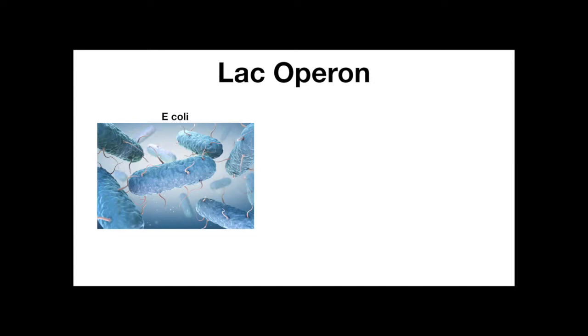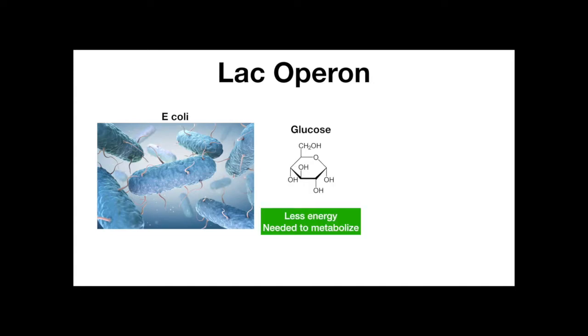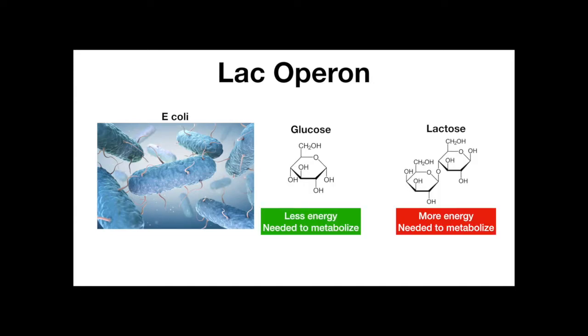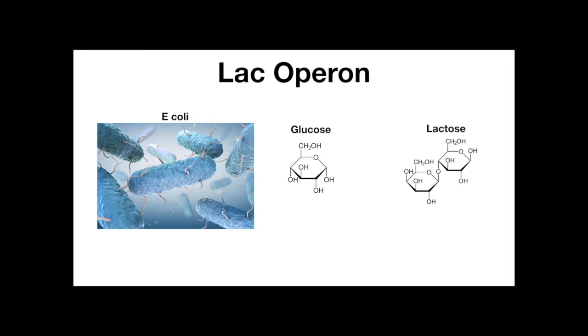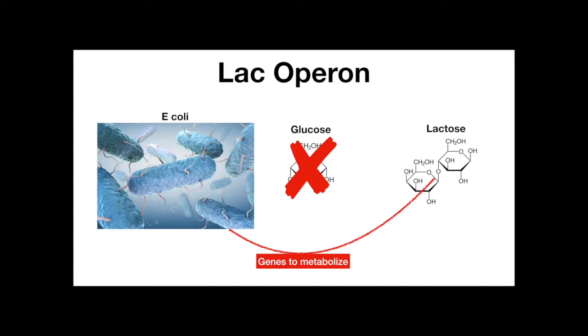In E. coli, it takes less energy to use glucose to make energy than it does for lactose. E. coli prefer glucose over lactose. However, if lactose is present and glucose is not, then the genes that encode for lactose metabolism will be turned on.